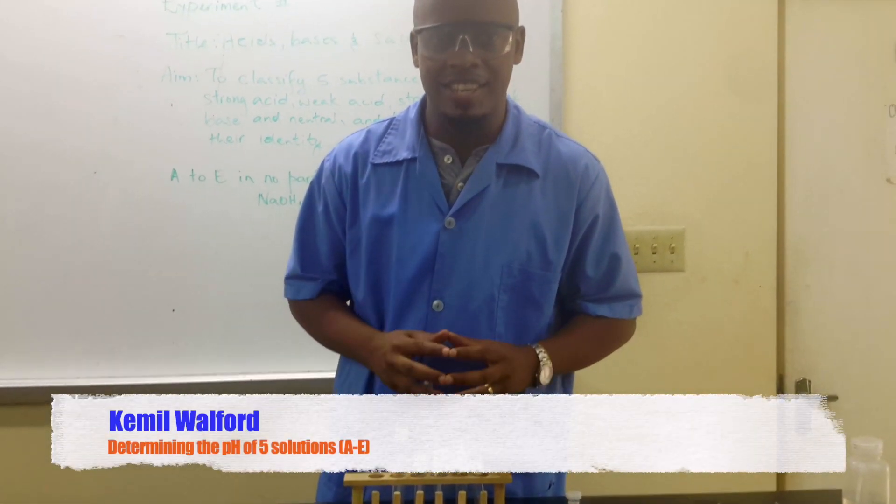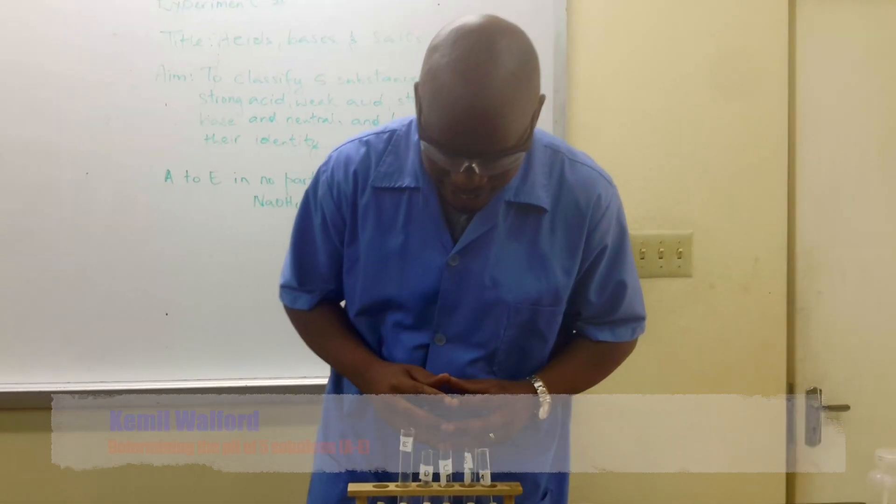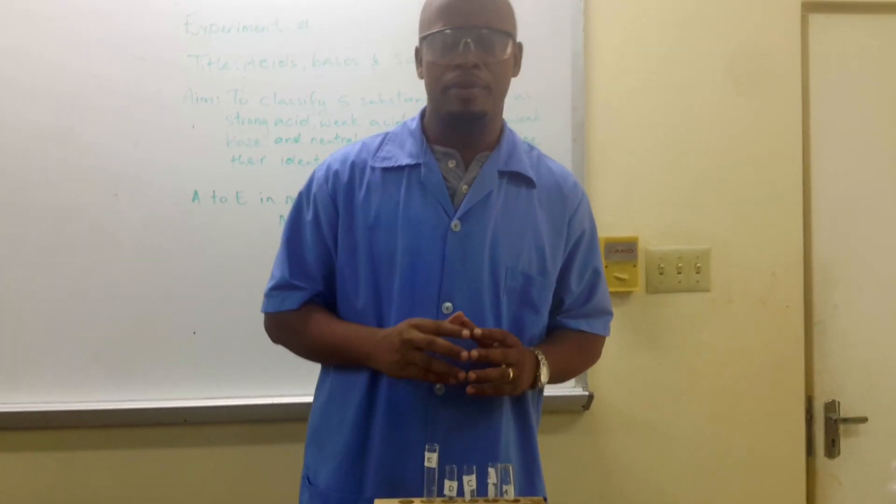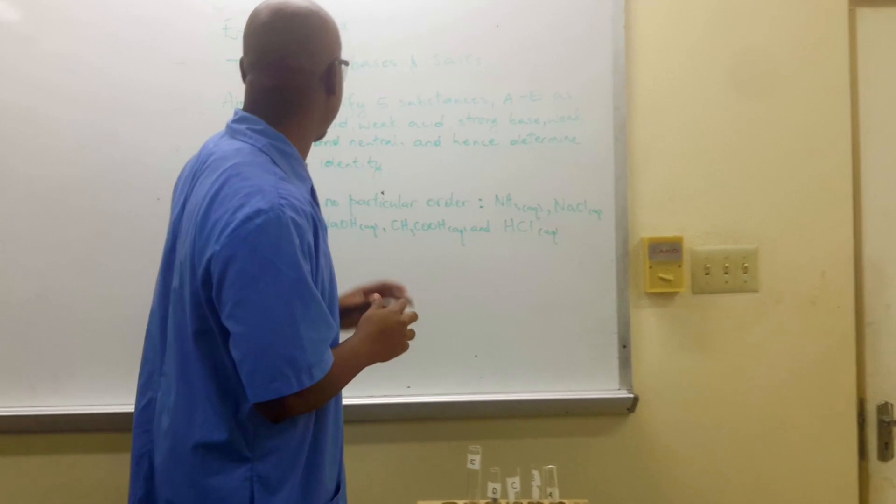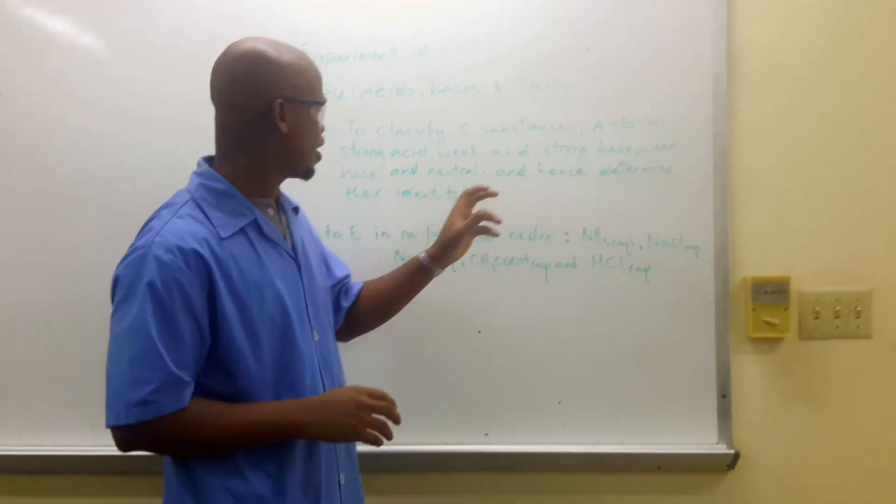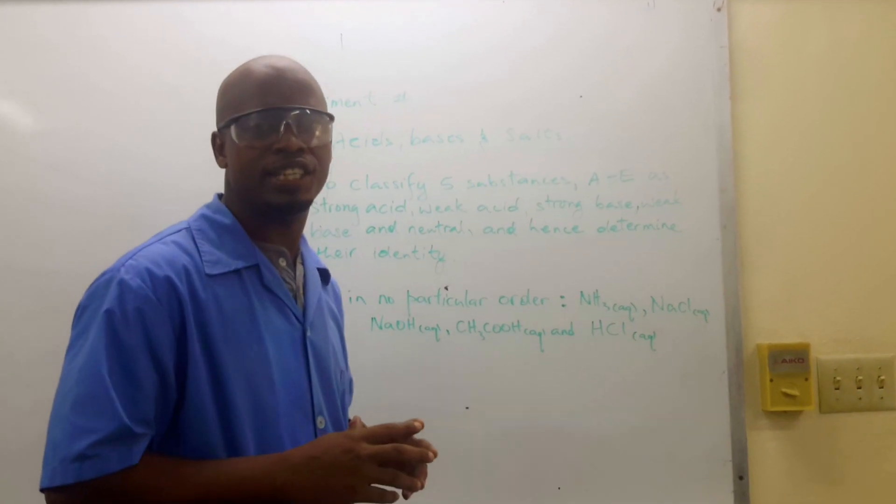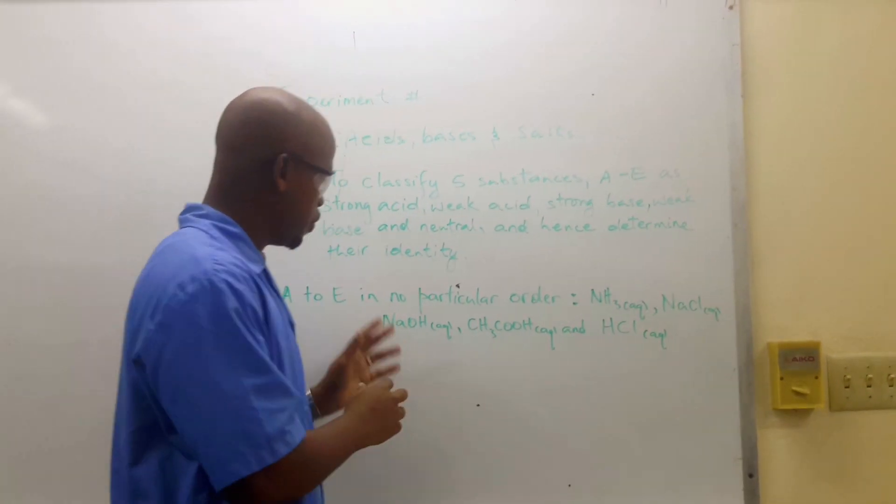In this acid, base, and salt experiment, we're given five substances labeled A to E, and we're going to classify them as strong acid, weak acid, strong base, weak base, or a neutral solution, and then we're going to determine the pH.